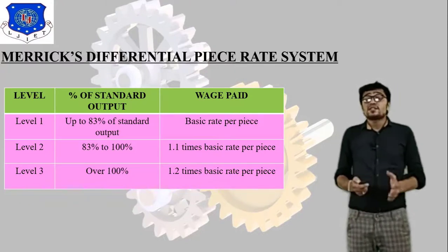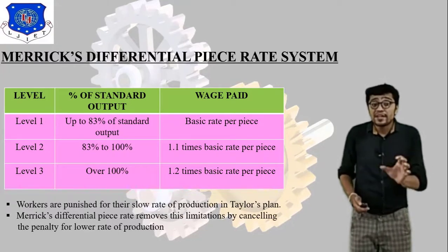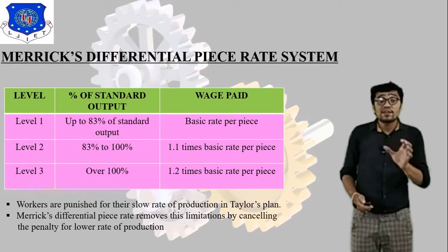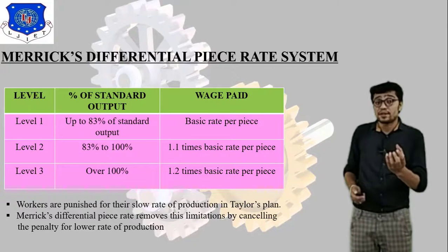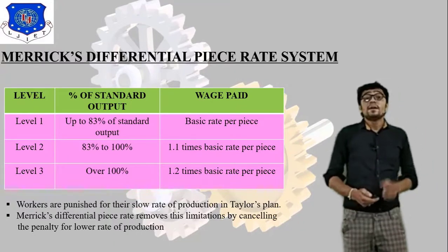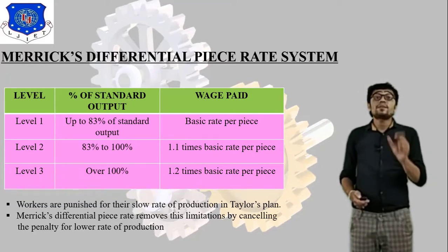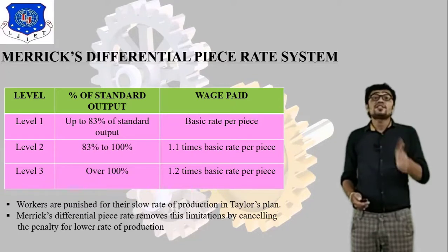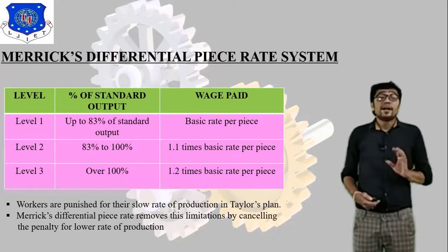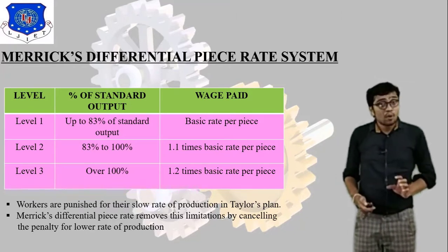This is Merrick's Differential Piece Rate System. Workers are punished for their slow rate of production in Taylor's system, but Merrick's Differential Piece Rate System removes this limitation by cancelling the penalty for lower rates of production. To recap: up to 83% — basic rate per piece; 83% to 100% — 1.1 times basic rate; over 100% — 1.2 times basic rate per piece.